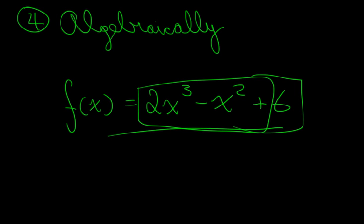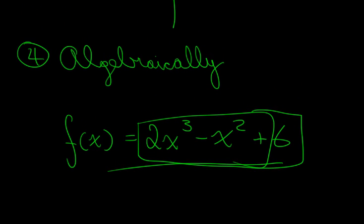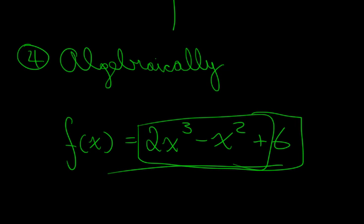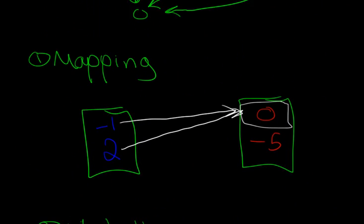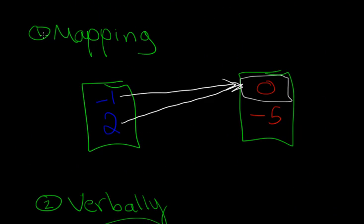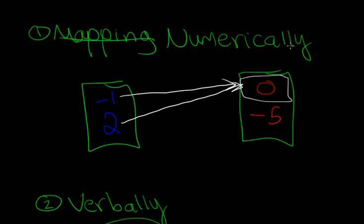Going back — when I said mapping, Stuart actually in his book does not say mapping. He says numerically, and describes it as by a table of values. This is kind of like a table of values, except you're putting arrows between two cells not connected by a mid-cell. So it's not really a table, but this is mapping — this is a numerical representation.